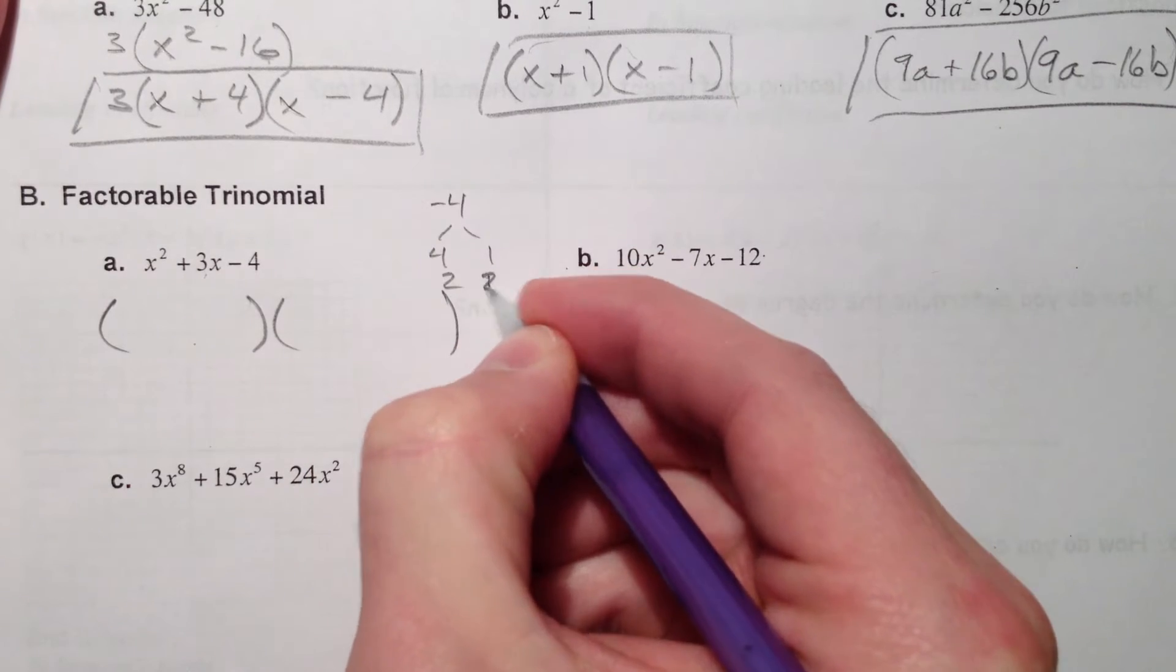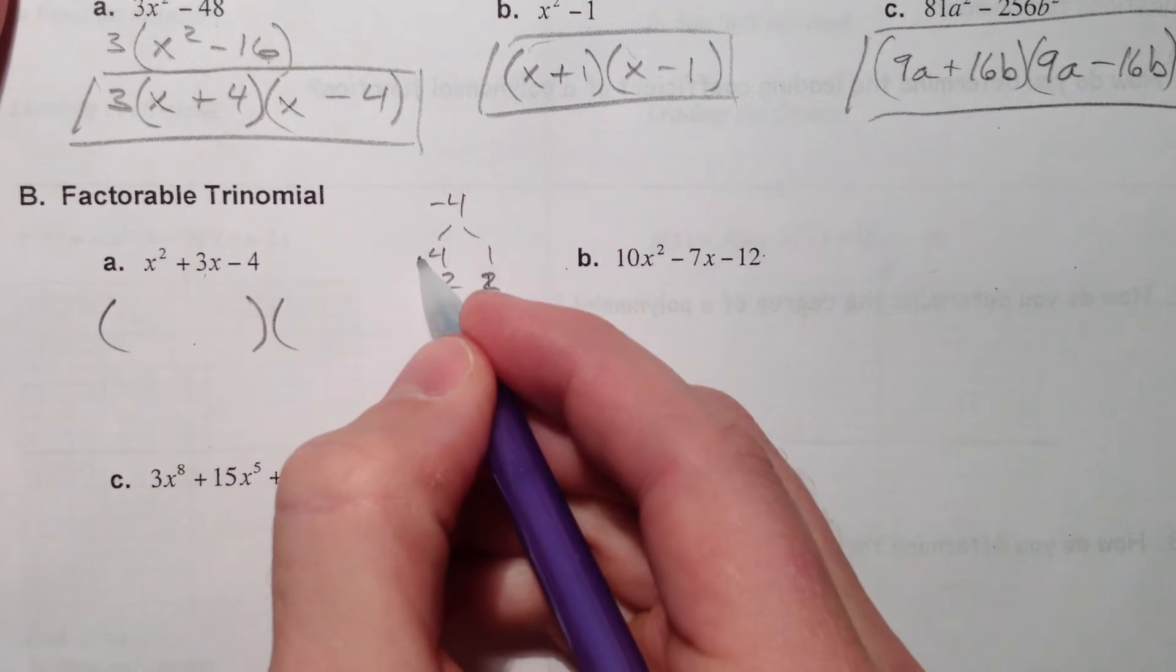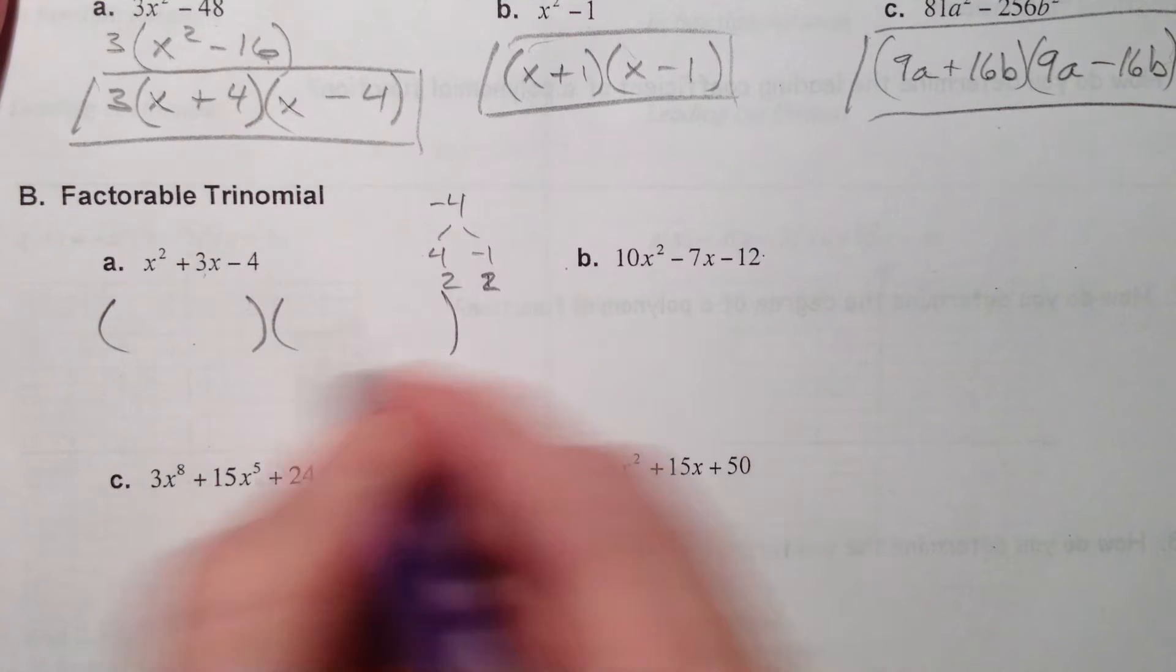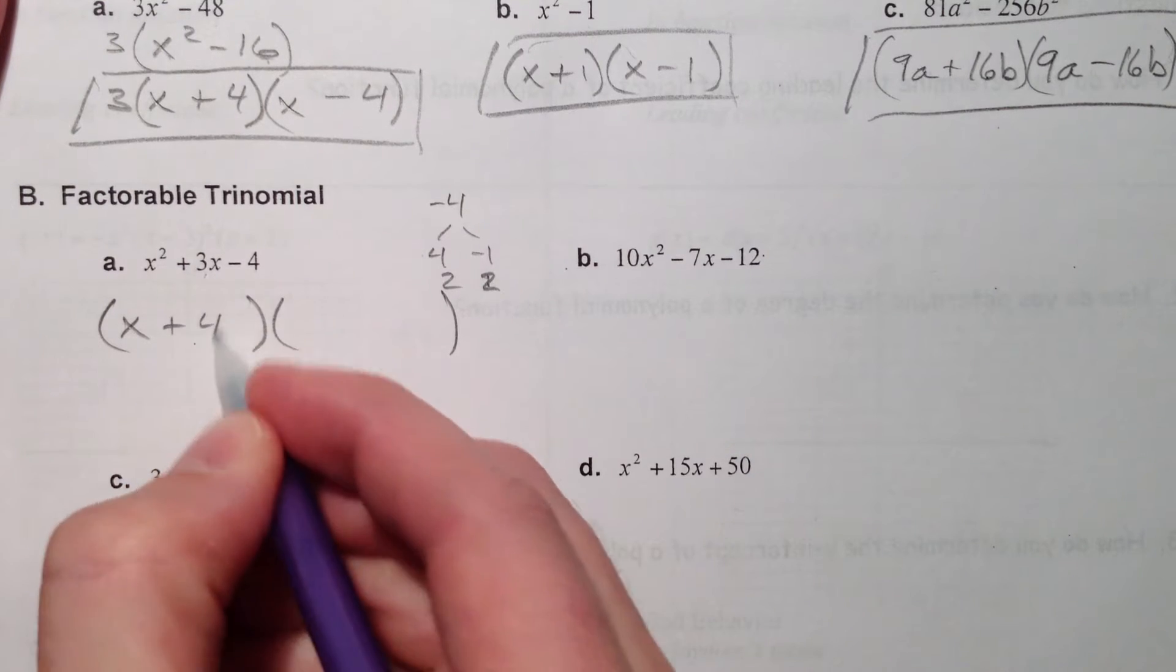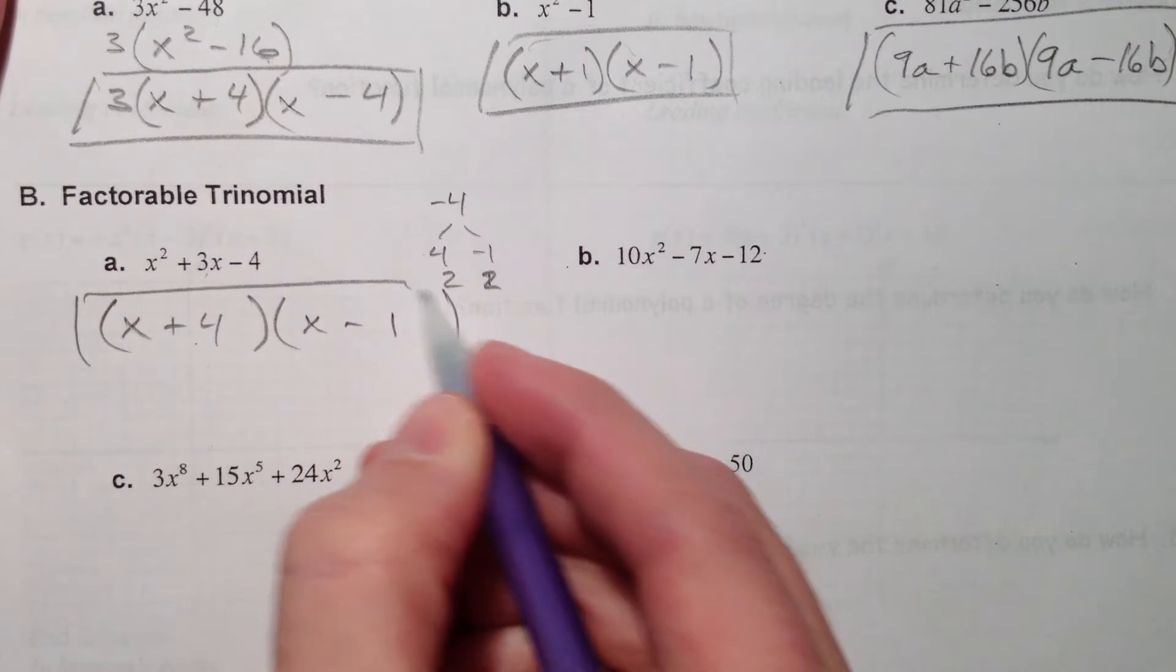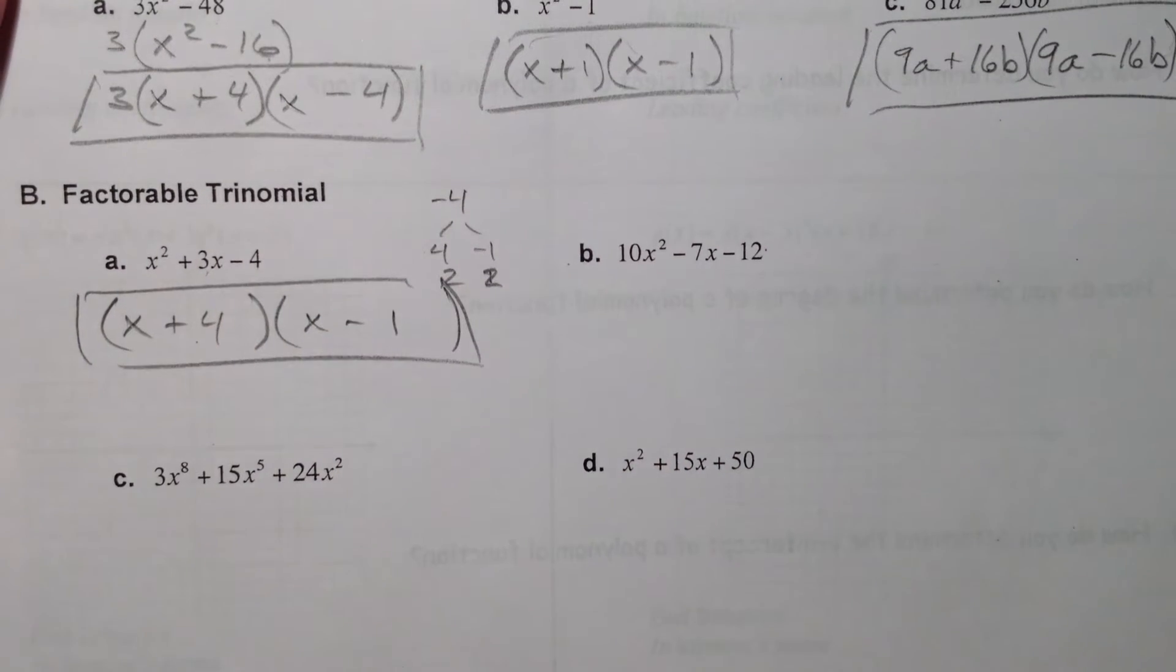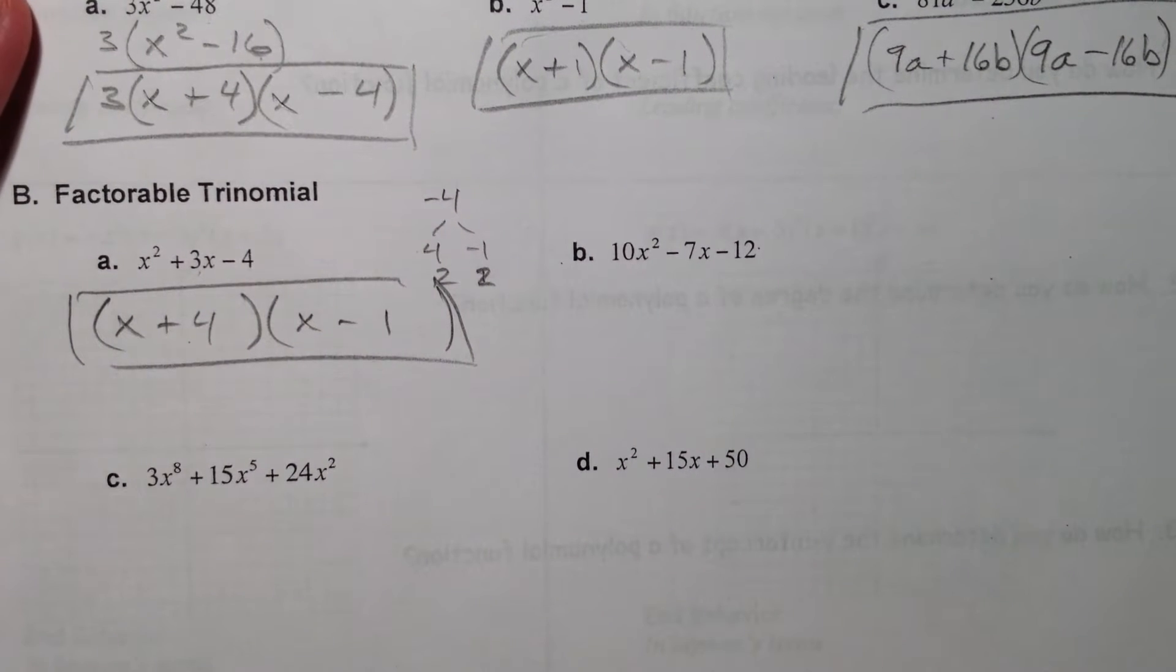4 and 1, 2 and 2. And so, to add to 3, it's got to be a positive 4 and a minus 1. So, x + 4, x - 1.